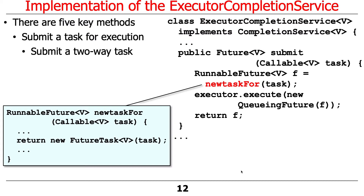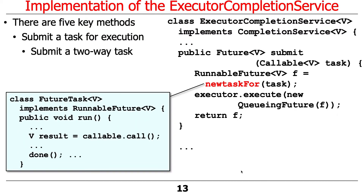So we've got a FutureTask — we get this thing back as a runnable future, but it's actually a FutureTask. FutureTask implements runnable future, so this run method is the one that does the bulk of the work. It's going to call the call method on the callable and then call the done method on the FutureTask.